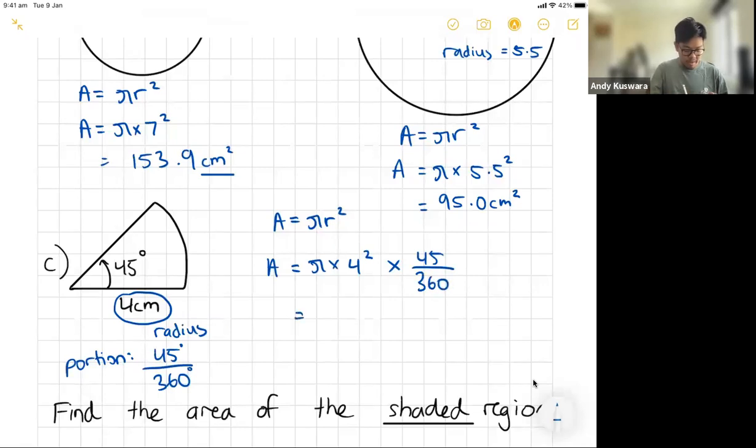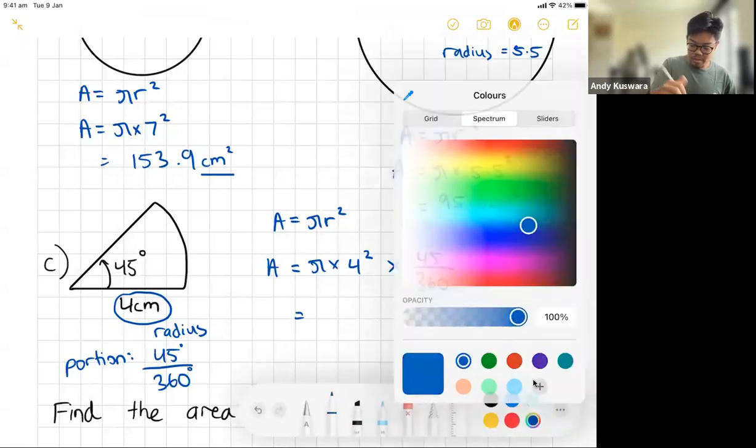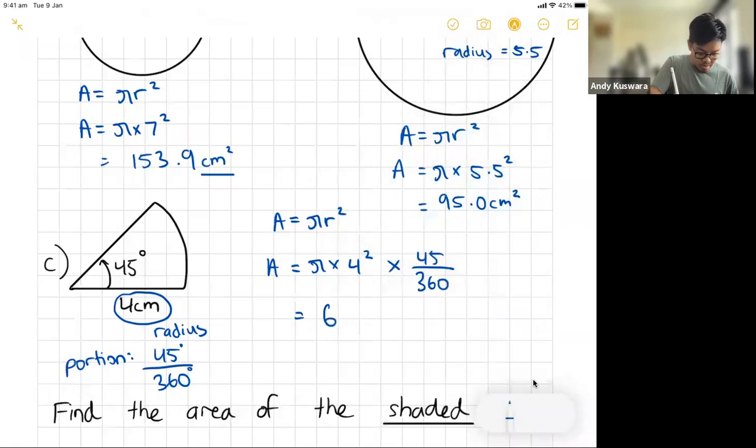Okay, so if I put this in my calculator, 45 on 360, I'll put it all there, making sure that we don't forget our squares and everything. What we end up with is we end up with an area of 6.28, that's to two decimal places, that's going to be centimeters squared.